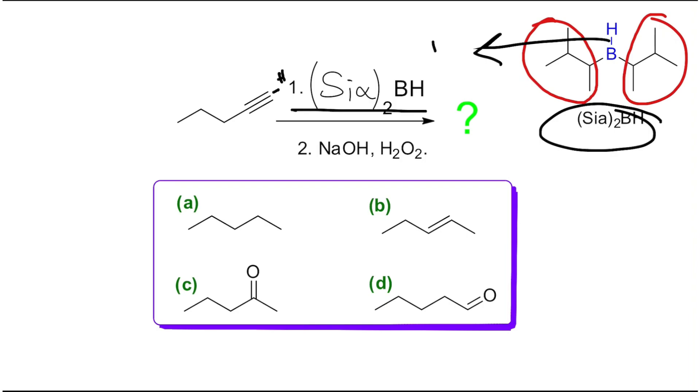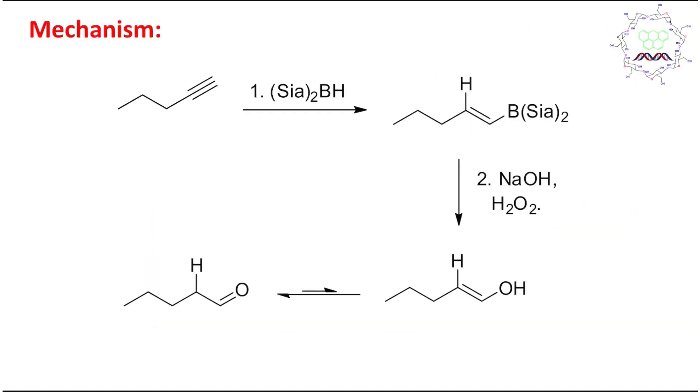From this you can understand that it has one unit reducing capability because one boron-hydrogen bond is there. It will transfer only one equivalent of hydrogen. Since no stoichiometry is mentioned, you can consider this is one-to-one reaction.